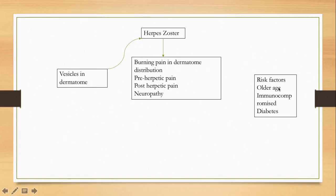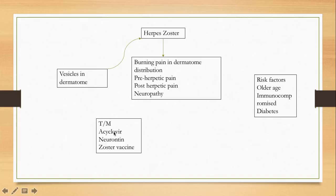Risk factors include older age and immunocompromised states — diabetes, HIV, and patients on immunosuppressive therapy. Treatment is acyclovir for the zoster itself, and gabapentin for neuropathic pain. Preventative treatment with the zoster vaccine can be given to patients to prevent infection.